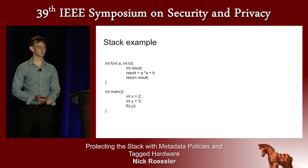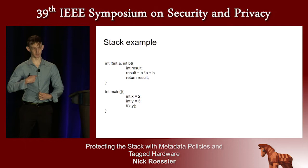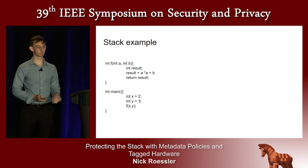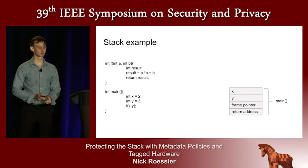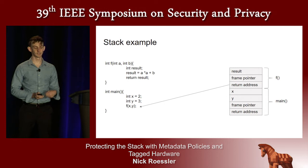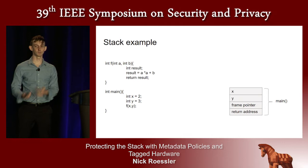Let's look at an example of stack memory while a function is running. On the left, there's a function f that takes a and b and returns a squared plus b. Below that, there's a main function that calls f. Main will have allocated space for its local variables x and y, as well as its frame pointer and return address. When main calls f, f pushes a new stack frame onto the top of the stack, allocating space for its local variable result, return address, and frame pointer. When f is finished running, it releases its stack frame and follows its return address, and control resumes back in main.